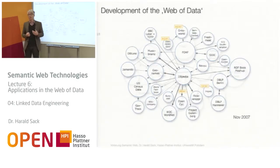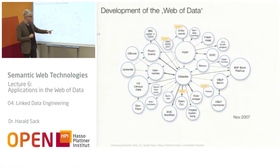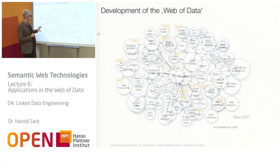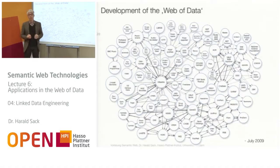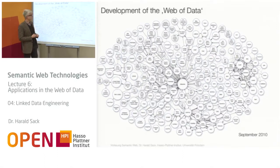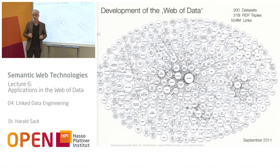The cloud soon developed. Already in November 2007, new datasets popped up — for example, OpenCyc, a much older ontology, was translated into linked data, and conference data from ISWC and ASWC appeared. One year later in September 2008, much more data appeared from the media domain: BBC Programs and BBC PlayCount data, and social media data started to be part of the linked data cloud. By July 2009, even more datasets appeared. In 2010 and 2011 the growth continued, and the last numbers from September 2011 show about 300 datasets with 31 billion RDF triples connected by about 500 million links.